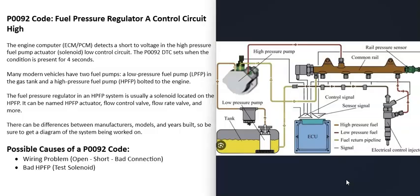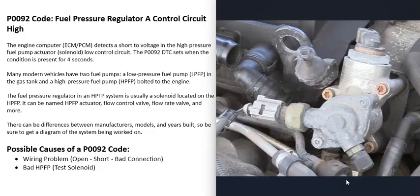It's going to require troubleshooting to know why. One thing to note about these high pressure fuel pump systems is that they can be designed differently and components can have different names. So if you go to work on a vehicle, it's a good idea to get a diagram for that specific vehicle. When it comes to these systems, it is very common for the pressure to be regulated by a solenoid located on the high pressure fuel pump. For example, right here, this is a Volkswagen - this is the high pressure fuel pump, and right here is the solenoid that controls the fuel pressure.